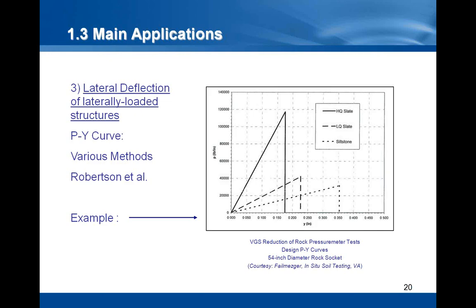Possibly the most common application, at least in North America, is for laterally loaded structures — for instance, for bridge piles. In these cases, P-Y curves will be directly obtained from the pressure meter curve. Various deduction methods can be used; one of them is the Robertson method. In order to obtain a P-Y curve, one will use the pressure and the radial strain measured during a test, and multiply them by the pile width. The curves displayed on the graph show, for different types of rock, the predicted lateral deflection compared to the applied load.